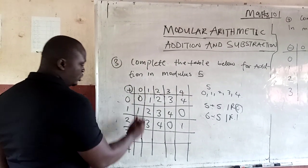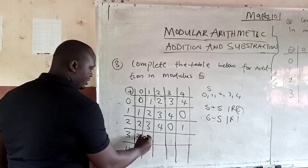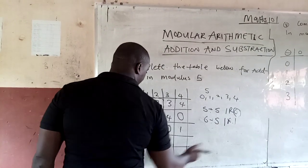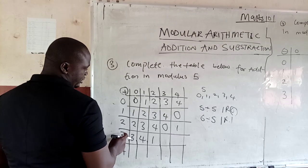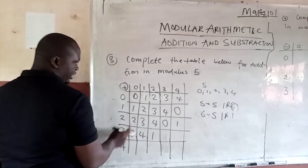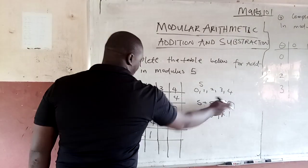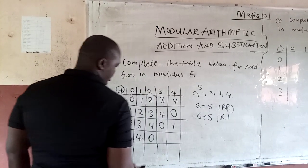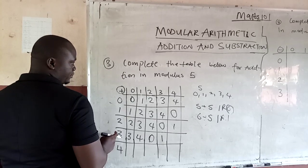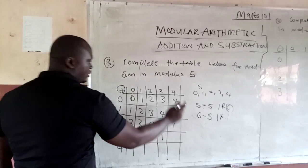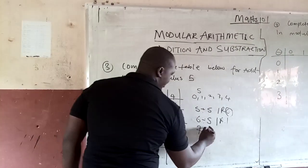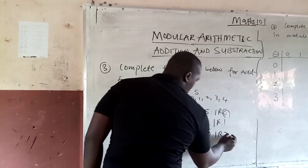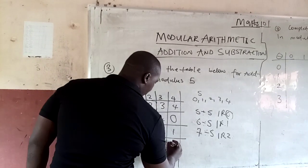3 plus 0 is 3. 3 plus 1 is 4. 3 plus 2 will give you 5, and we resolve it to a remainder of 0. 3 plus 3 is 6. 6 divided by 5 is 1, remainder 1. So we take 1. Now, 3 plus 4 is 7. Since it's in modulus 5, we divide 7 by 5, which goes 1 time with a remainder of 2. So what we are going to put is 2.